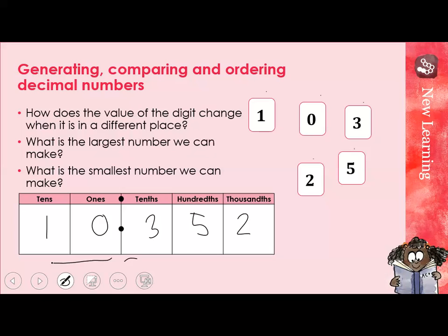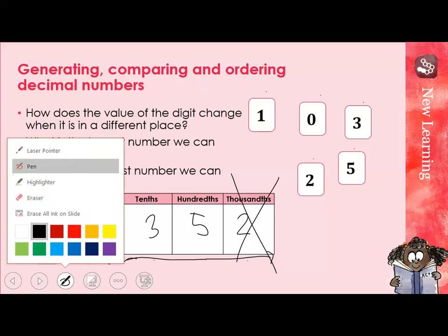Anything before the decimal point we are familiar with — we know that number is 10. Anything after the decimal place, we just say the digits from left to right: 10.352. We do not say 10.352. Similarly, ignoring the thousandths for a second, we would not say 10.35 — we would say 10.5. Understanding this is going to help us when we are ordering and comparing these decimal numbers.